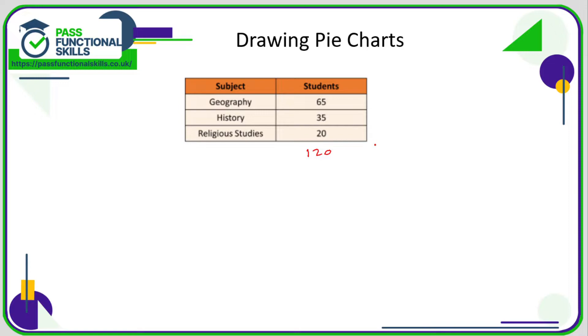So what we want to work out is what fraction said religious studies was their favorite subject. So that would be 20/120. Now that can be simplified to 2/12, and that can be simplified to 1/6.